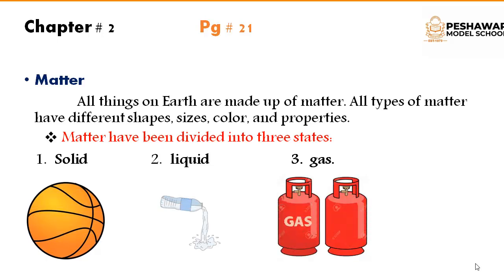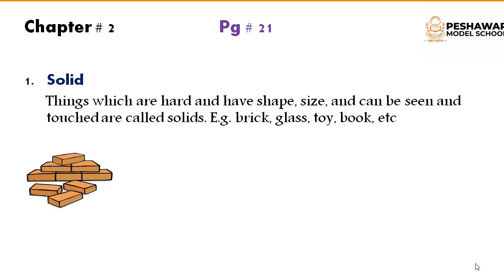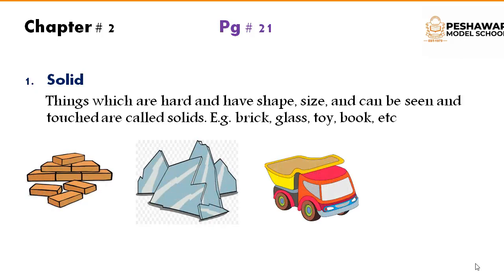These are the three states of matter which we will discuss today in this video. First of all, we will discuss the solid. Things which are hard and have shape, size, and can be seen and touched are called solid. For example, brick, glass, toy, book, etc.